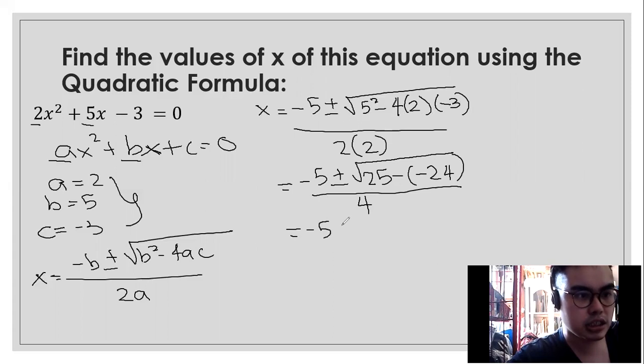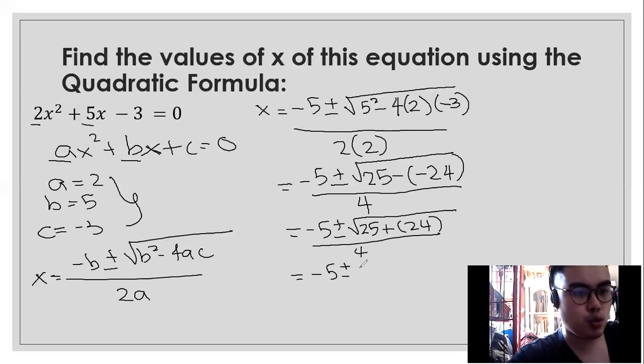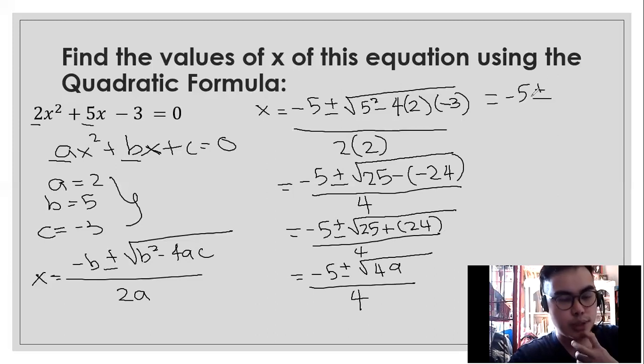What are we going to do next is observe these signs. Since both are minus or negative, it will be positive because nagmumultiply silang dalawa. Ang natitira na ngayon ay 25 plus 24. What we're going to do is to add. So, it will be 49 over 4. Now, what we're going to do next is find the square root of 49. What's the square root of 49? It is 7. Kasi yun si 49, perfect square yan. Kaya, maahanap mo yung square root niya.